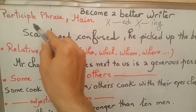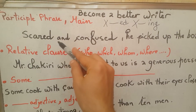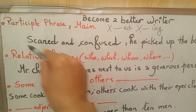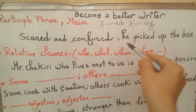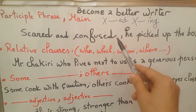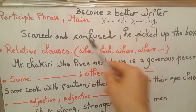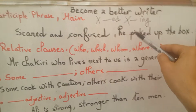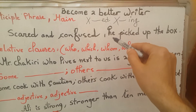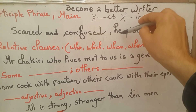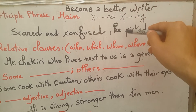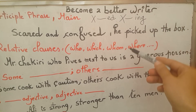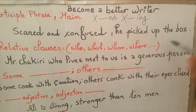So 'scared and confused' is the adjectival phrase — there is no subject. This participle phrase can be placed in any position: at the beginning, or in the middle, as in 'He, scared and confused, picked up the box.'